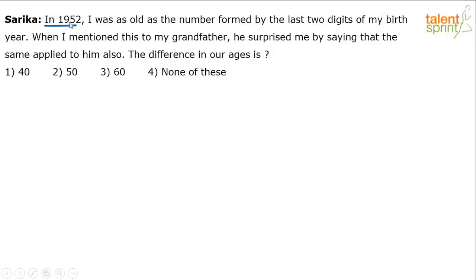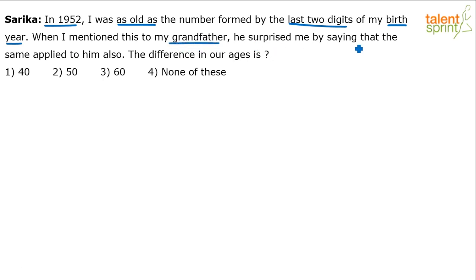In 1952, the person was as old as the number formed by the last two digits of their birth year. So the age of the person equals the number formed by the last two digits of the birth year. When this person mentioned it to their grandfather, the grandfather was surprised, saying the same was applicable to him — his age also equals the last two digits of his birth year. The question asks: what is the difference in their ages?